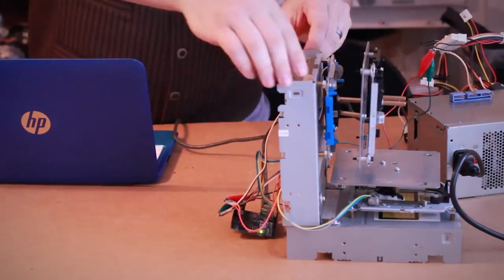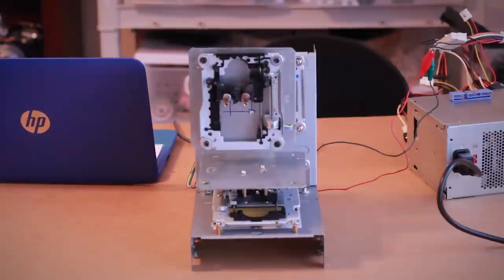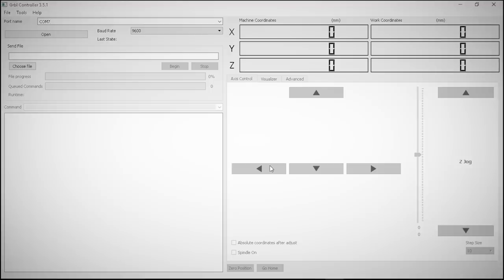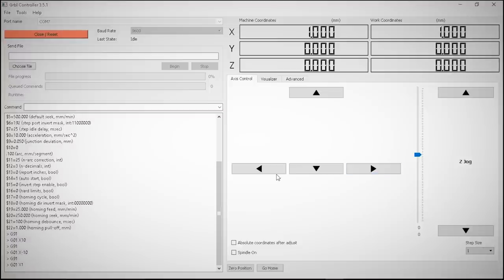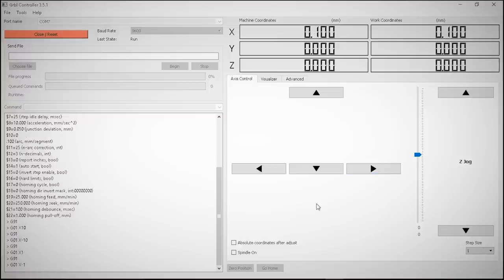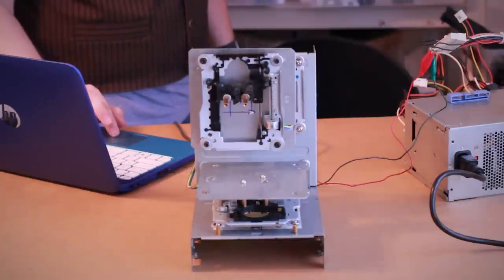So with everything properly wired, power up your power supply and connect your Arduino to the computer. Then open up the Gerbil Controller, select the port name for your Arduino, and click open. Now we can use the arrows on the right to test out each motor. Just make sure the step size is set to 1. If any of the motors are moving backwards, you can go under tools and options to invert the axis. Pretty cool, right?